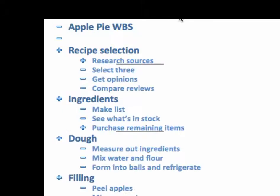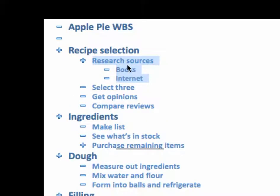I'll break this into level two, and I broke this down into another level. So in recipe selection, I have to research the sources, select three recipes I want to use, get some opinions and compare reviews, and finally make a selection. I could break down researching sources even further — for instance, books versus the internet.